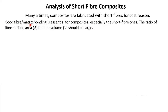Good fiber-matrix bonding is essential for composites, especially for short fiber ones. For long fibers, fiber-matrix bonding is important; however for short fibers it is extremely important. Therefore the ratio of fiber surface area A to fiber volume V should be large. A large ratio means the surface area is very high in comparison to its volume, giving very good adhesion. This is one of the key conditions for short fiber composites.